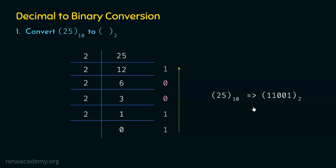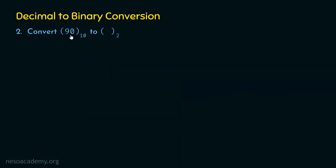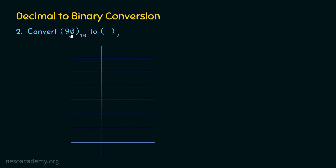Let's see one more example to reinforce this concept. Here, 90 is the decimal number, and we need to convert it to its equivalent binary number. We start with 90, put the divisor 2, and divide. We get 45 as the quotient and 0 as the remainder. Then we divide 45 by 2 and get 22 as the quotient and 1 as the remainder.